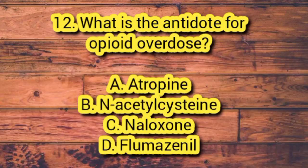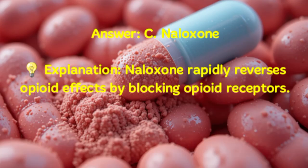Number 12. What is the antidote for opioid overdose? A. Atropine. B. N-acetylcysteine. C. Naloxone. D. Flumazenil. Answer: C. Naloxone. Explanation: Naloxone rapidly reverses opioid effects by blocking opioid receptors.